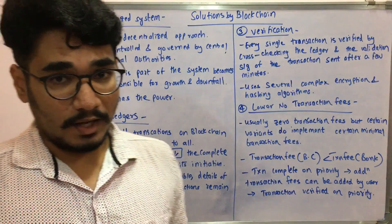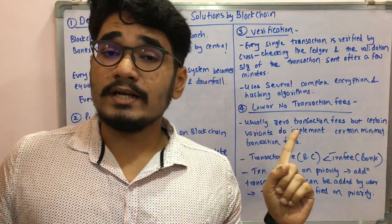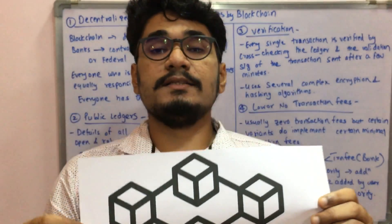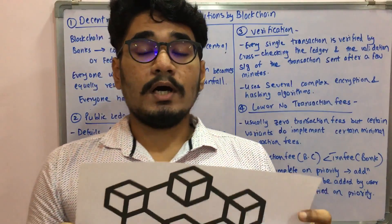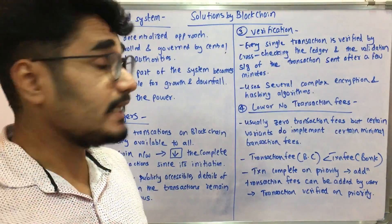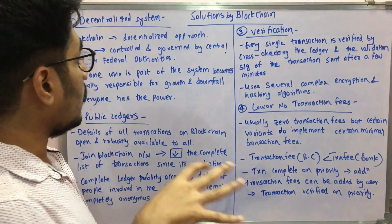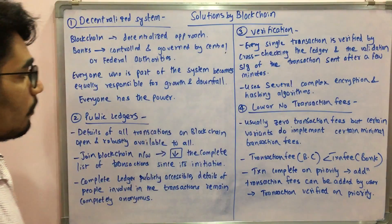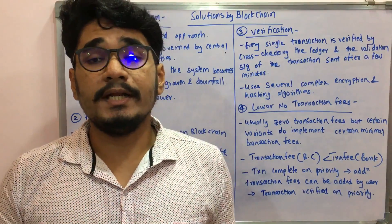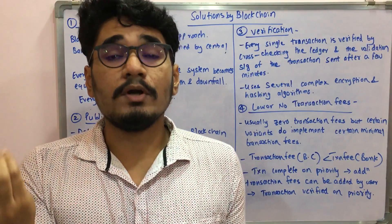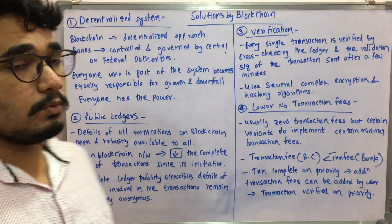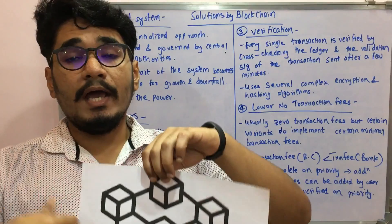The very first solution provided by blockchain is the decentralized system. As you can see in this picture, this is how a decentralized system looks. Initially, physical banks were controlled and governed by central or federal authorities. If you wanted to do transactions or get data on a public holiday, that was not possible — but blockchain overcomes that.